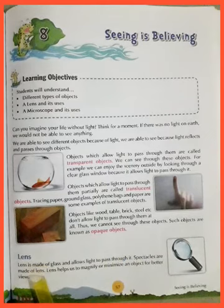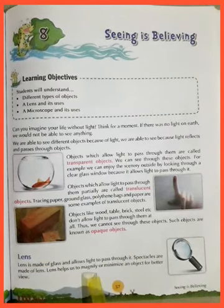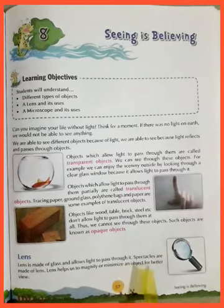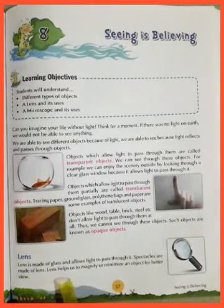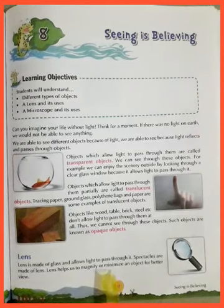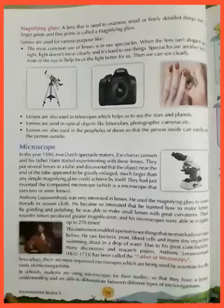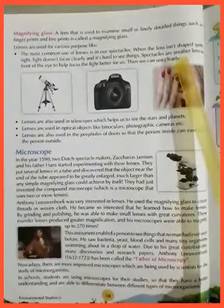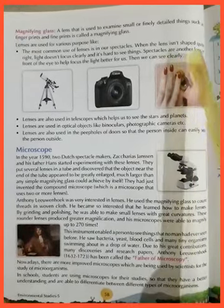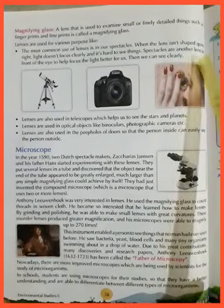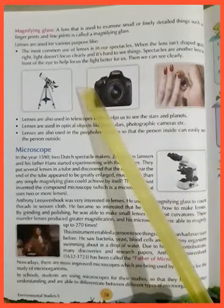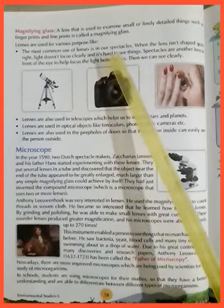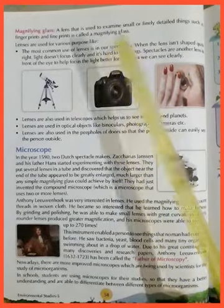Lens. A lens is made of glass and allows light to pass through it. Specs are made of lenses. Lenses help us to magnify or minimize an object for a better view. A lens that is used to examine small or finely detailed things, such as fingerprints or fine print, is called a magnifying glass.